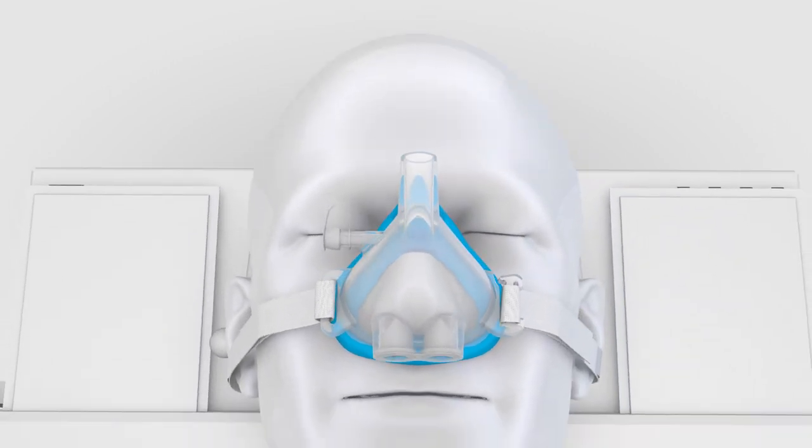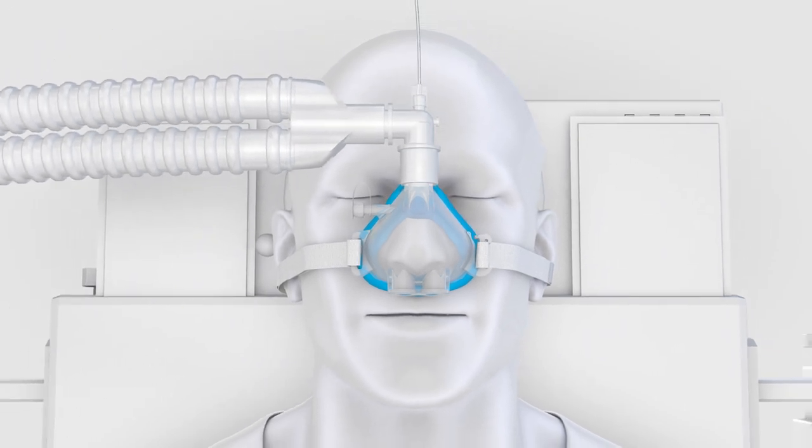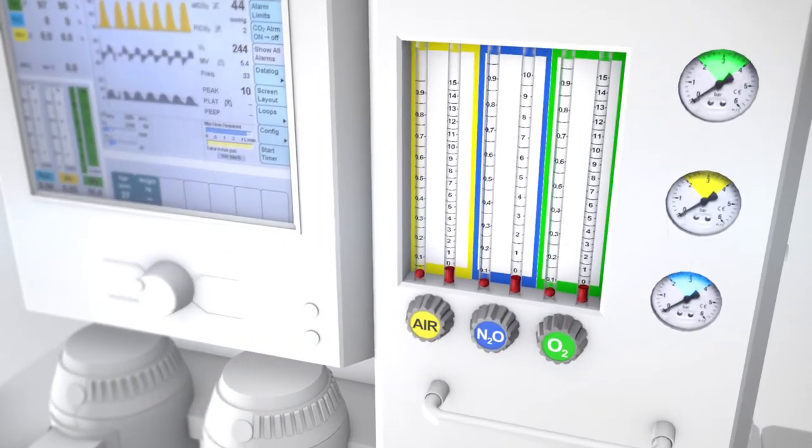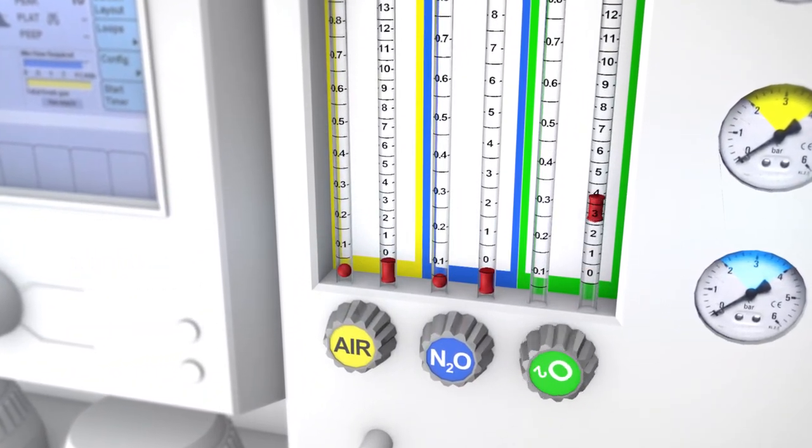Inside the operating room, connect the circuit from the anesthesia machine to the SuperNova device using the circuit port, remembering to have adequate fresh gas flowing and the machine set to spontaneous mode.